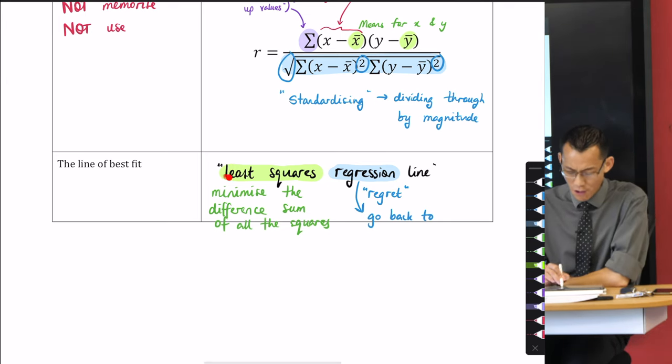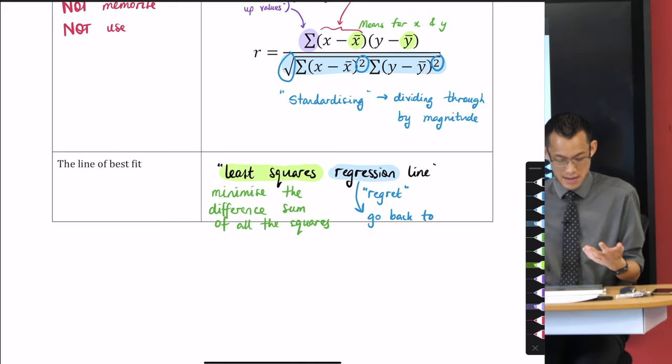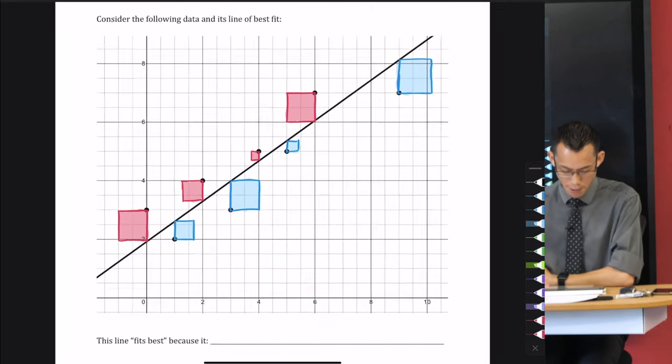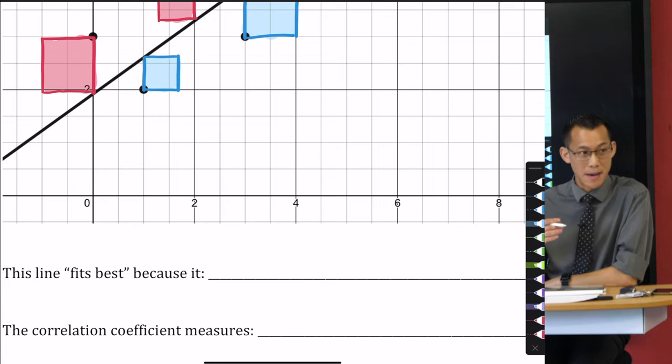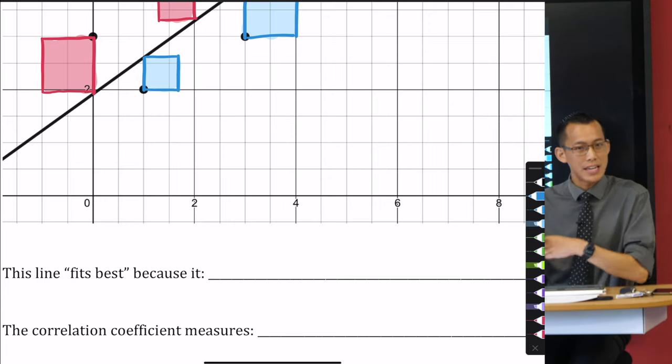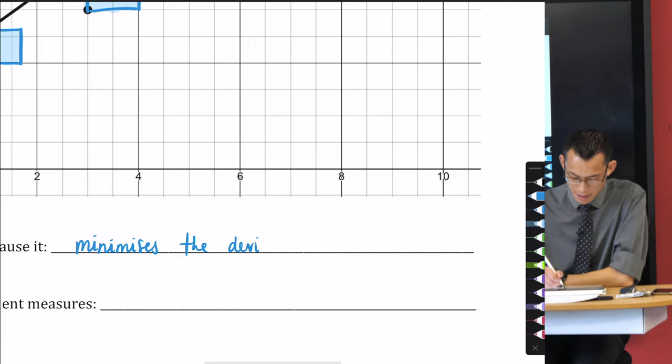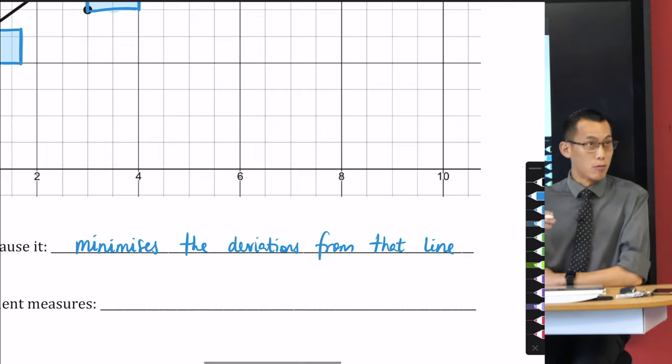So the least squares regression line is trying to say, when you regress back to that line of best fit, which is the line that will make those squares the smallest. So the least squares part means, can we minimize? And the regression part means, like what are you minimizing? And the answer is that distance, those differences, all of those squares added up together to get you back to the line. So even though this is a very long, awkward definition, once you understand what each of the individual pieces are, you can see it literally just means what it says.